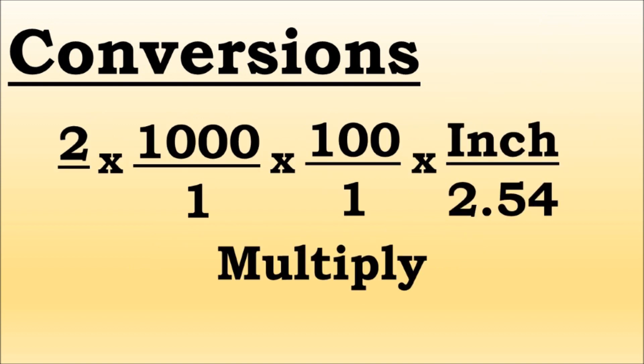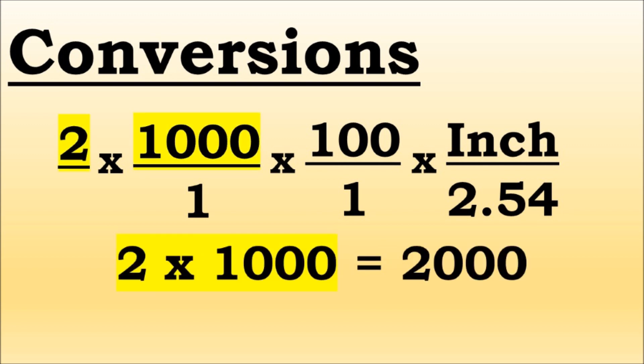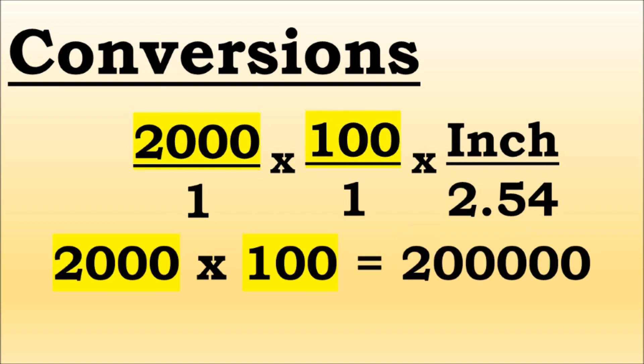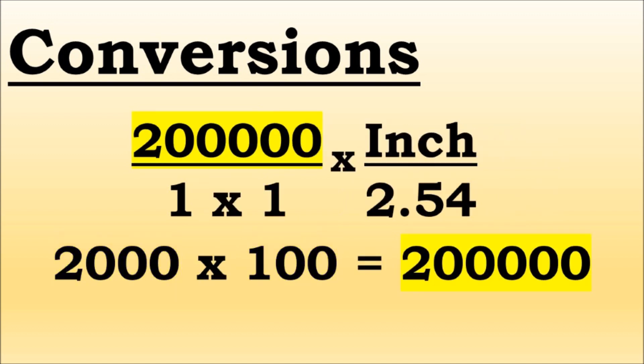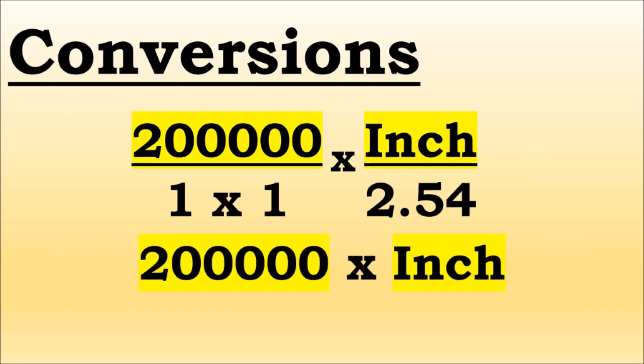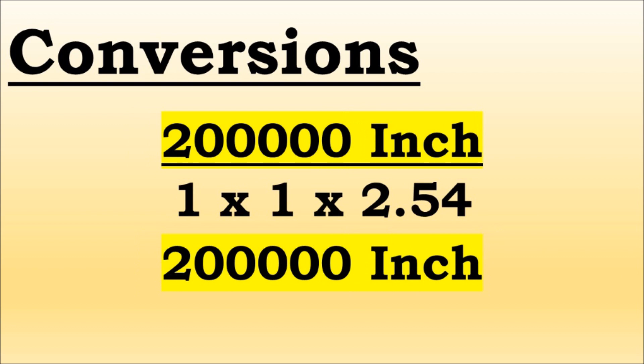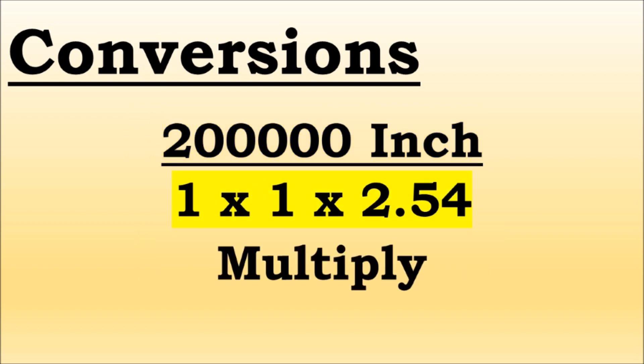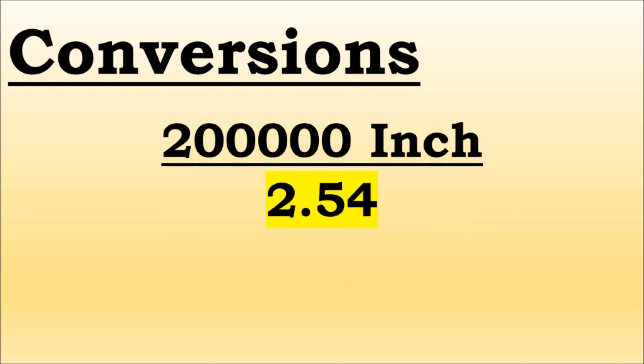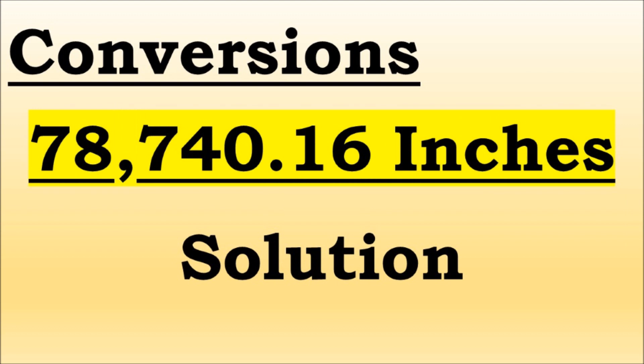Multiplication is next. 2 times 1,000 equals 2,000. 2,000 times 100 equals 200,000. 200,000 times inches. Continue to multiply 1 times 1 times 2.54. Last, divide by 2.54 to get 78,740.16 inches. This is the solution.